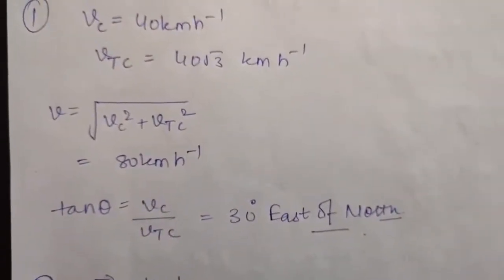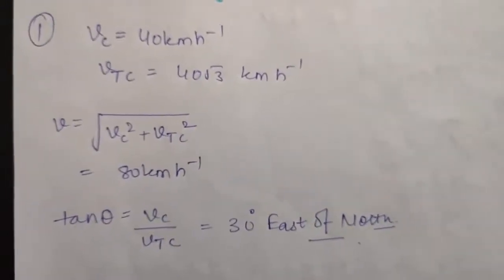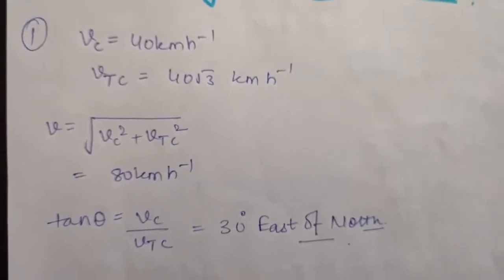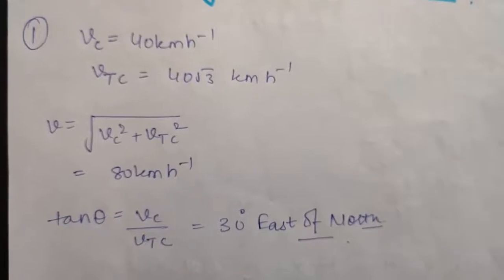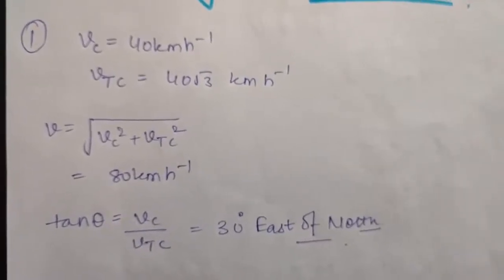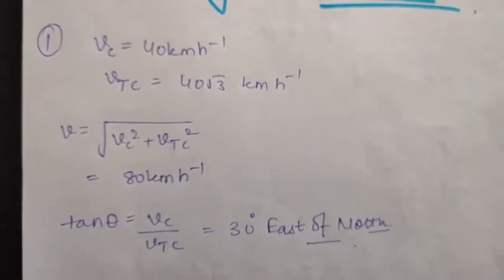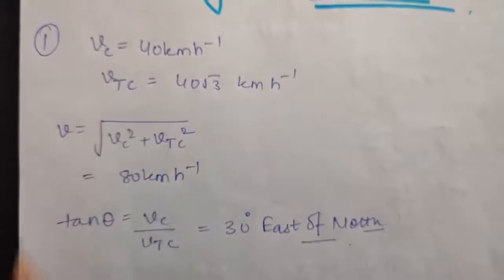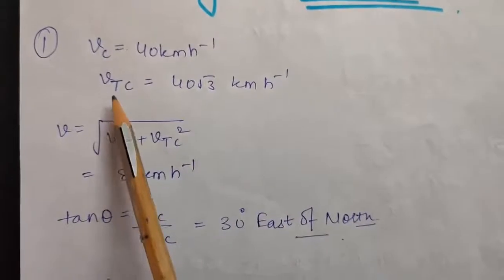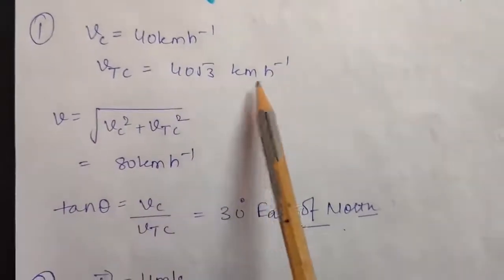The first question says: to a man going east in a car with a velocity of 40 km per hour, a train appears to move towards north with a velocity of 40 root 3 km per hour. What is the actual velocity and the direction of motion of the train? So, vc that is velocity of car is given to be 40 km per hour and velocity of train with respect to car is given to be 40 root 3 km per hour.